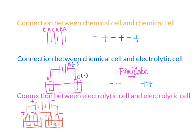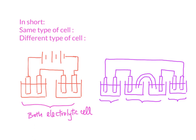So within the same type of cell — electrolytic to electrolytic — it will be positive, negative, positive, negative alternating. To summarize: same type of cell gives positive, negative, positive, negative alternating. Different types of cells — chemical and electrolytic — will be negative to negative and positive to positive.